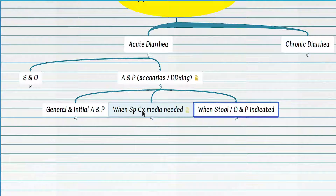Consider a patient with acute diarrhea who was initially evaluated, sent home with supportive care and antidiarrheal agents, but returns to the ER after three weeks with no response to treatment. This patient is in the two-to-four-week window, referred to as persistent or subacute diarrhea. Additionally, this patient's initial evaluation was negative. These are two common indications for assessment of stool for ova and parasites.